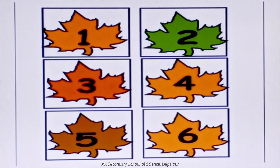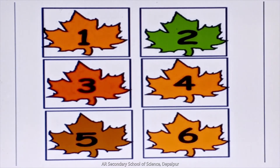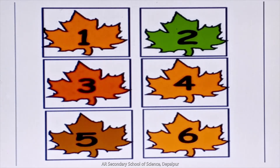See the leaves. Ab hum in leaves ko count karenge. 1, 2, 3, 4, 5 and 6. How many leaves are there? Good. There are six leaves. Ab hum batayenge, hum ne leaves ko kis ki help se count kiya hai? Good. Numbers ko use karte hue hum ne leaves ko count kiya hai.